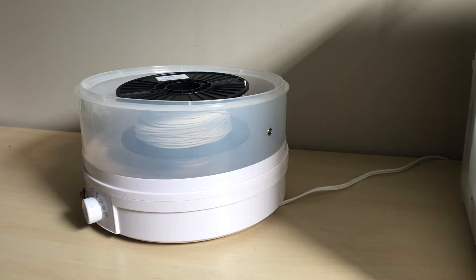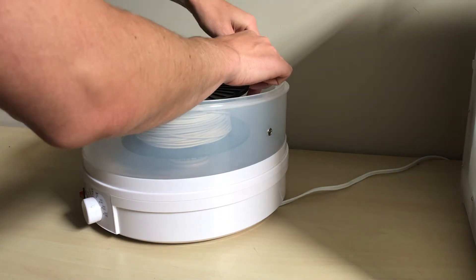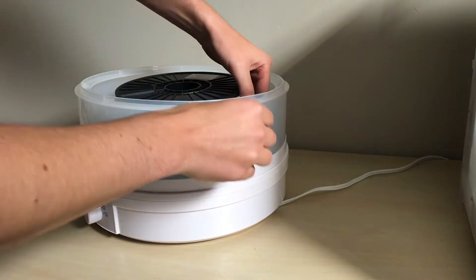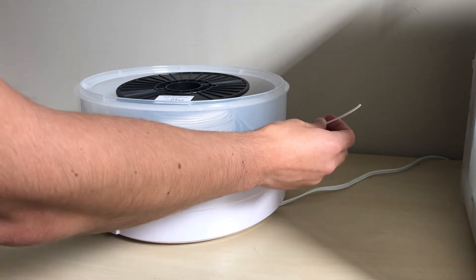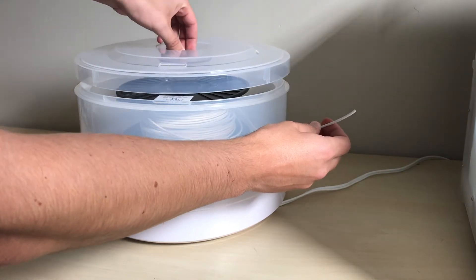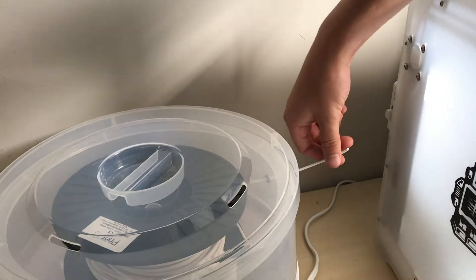The dryer offers the added benefit of being able to both dry and feed directly to your 3D printer, thanks to these integrated holes on the side, which allow you to feed directly to your printer with both 1.75mm and 2.85mm filaments.